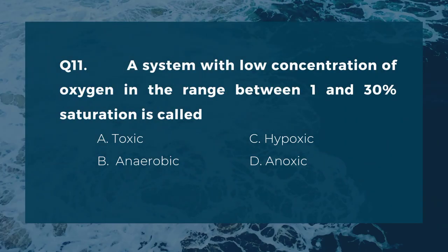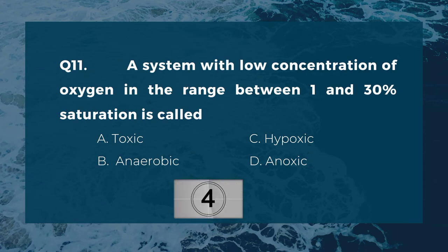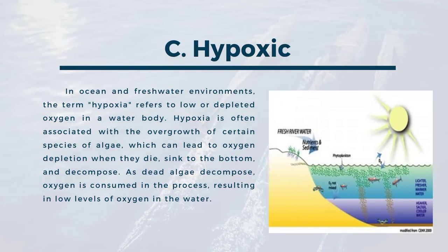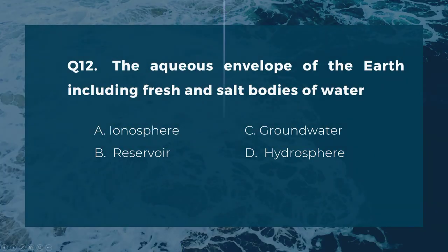Question eleven: a system with low concentration of oxygen in the range between 1 and 30% saturation is called. A) toxic, B) anaerobic, C) hypoxic, D) anoxic. The correct answer is C, hypoxic. In ocean and freshwater environments, the term hypoxia refers to low or depleted oxygen in a water body. Hypoxia is often associated with the overgrowth of certain species of algae, which can lead to oxygen depletion when they die, sink to the bottom, and decompose. As dead algae decompose, oxygen is consumed in the process, resulting in low levels of oxygen in the water.